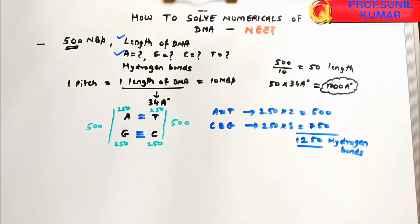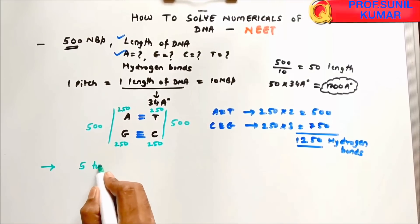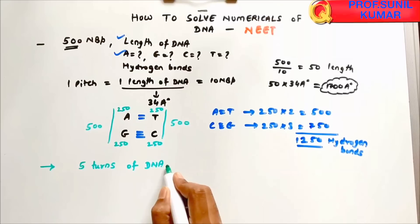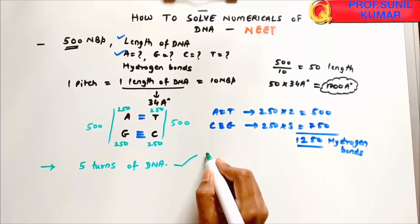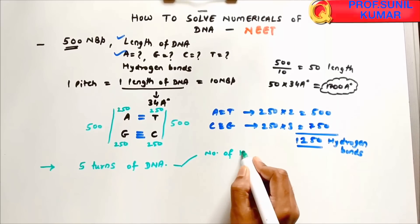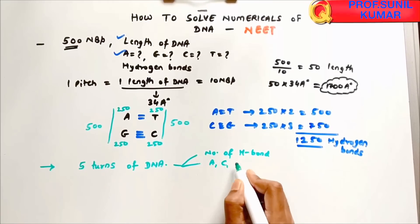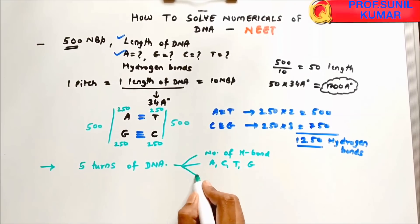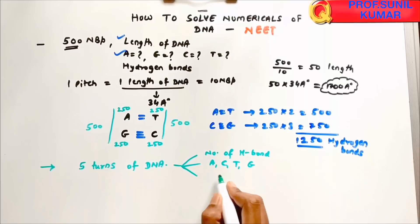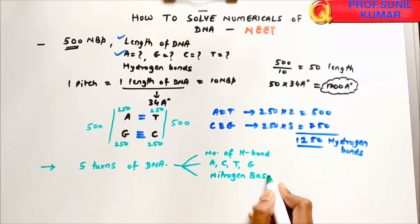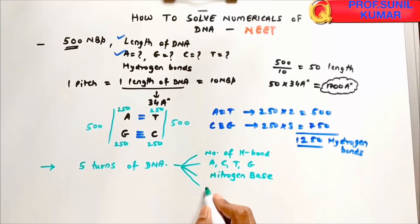Next numerical: if there are 5 turns of DNA, find the number of hydrogen bonds, the amounts of A, C, T, G, the number of nitrogen bases, and the number of phosphodiester bonds.